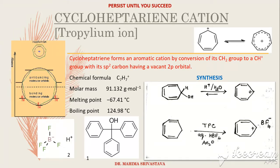It is a very stable carbocation, also known as tropylium cation. Tropylium cation is so stable that tropylium bromide is ionic in nature rather than being covalent. This ion is soluble in water but insoluble in diethyl ether.